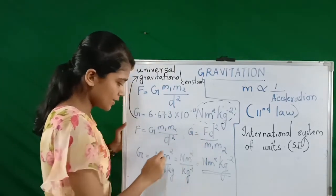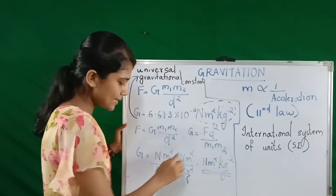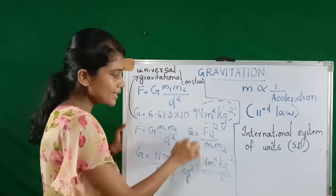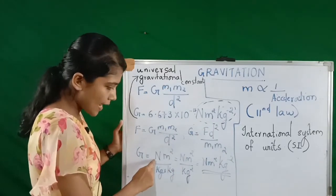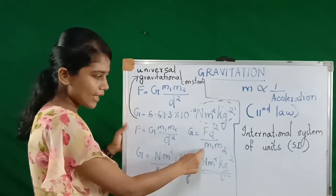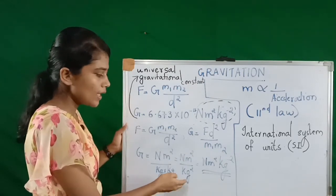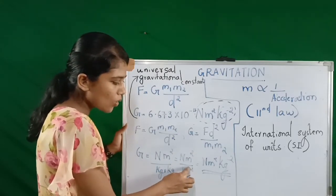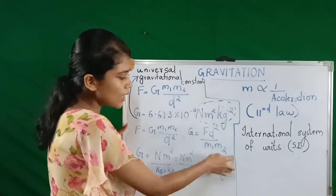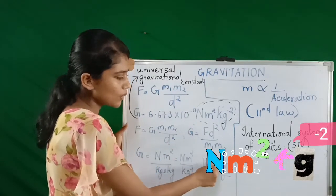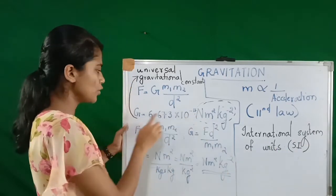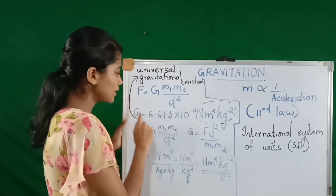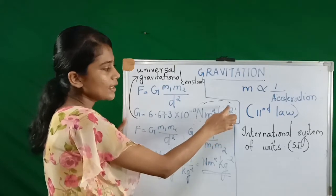The SI unit for force is Newton, the SI unit for distance is meter, and the SI unit for mass is kilogram. Applying all these in the equation, we get N m² divided by kg into kg, which becomes kg². Bringing kg² to the numerator makes it kg raised to minus 2. So the equation converts to N m² kg⁻², and that is the SI unit for G.